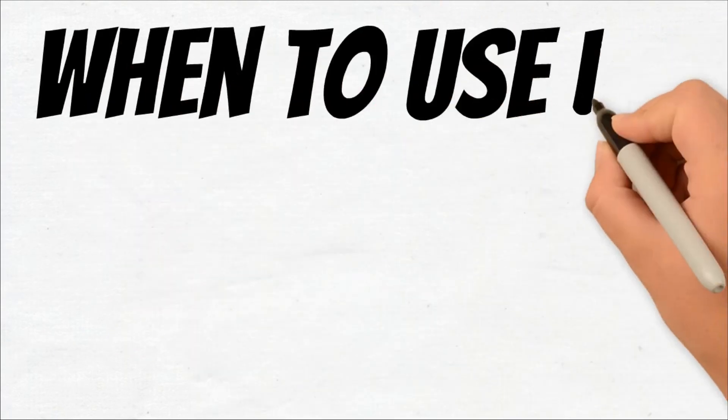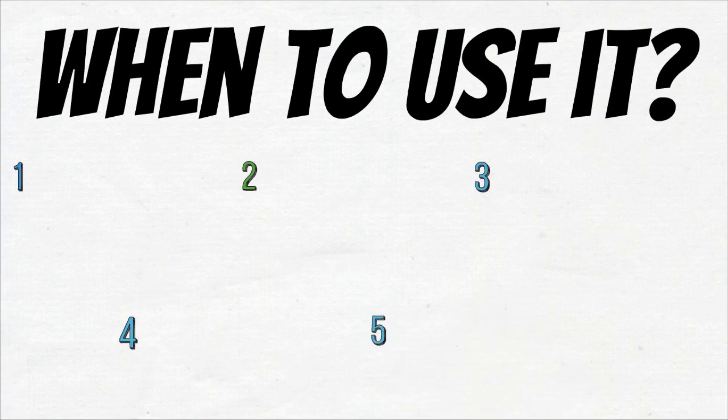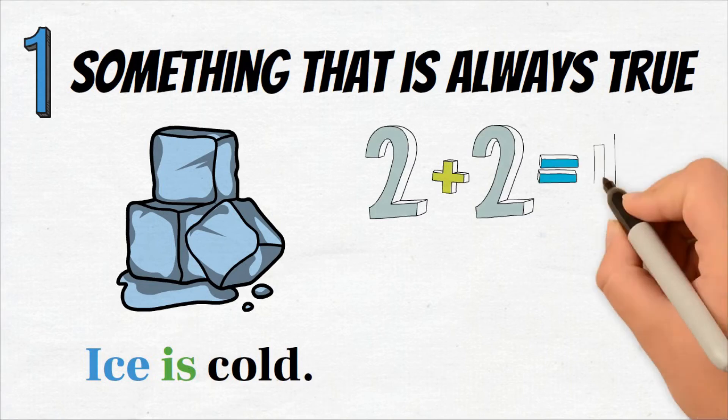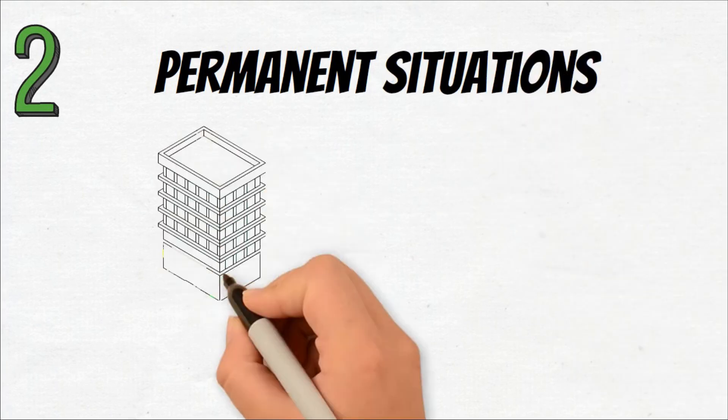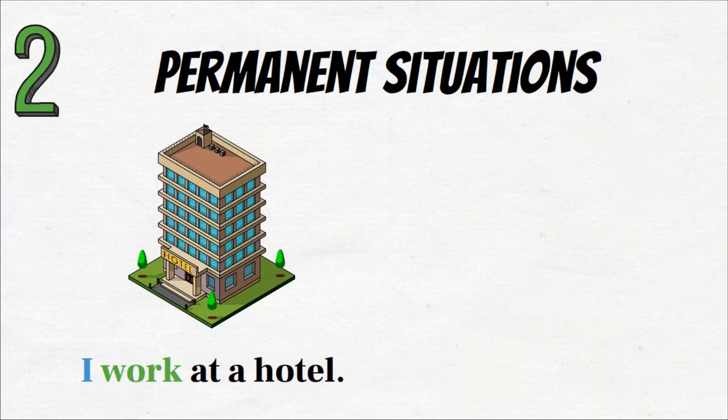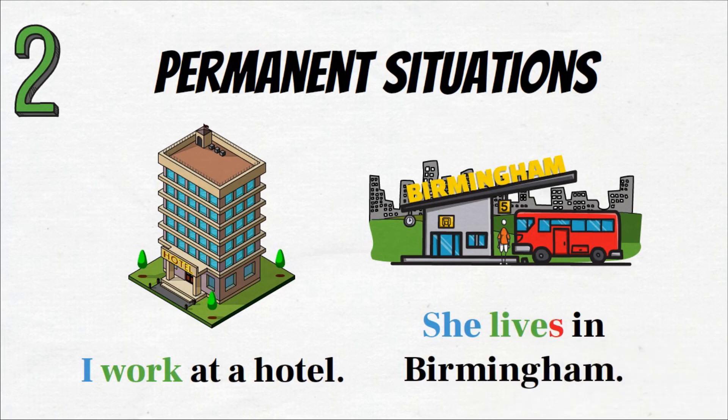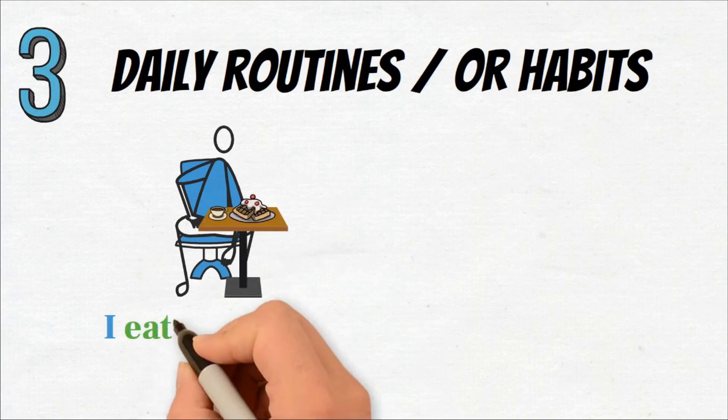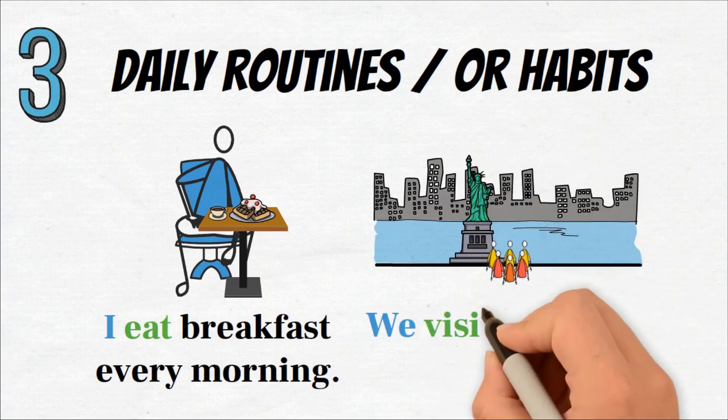Okay, let's see when we should use the present simple tense. We use the present simple tense to describe: Number one, something that is always true. Ice is cold, or two plus two equals four. Number two, permanent situations. I work at a hotel, or she lives in Birmingham. Number three, daily routines or habits. I eat breakfast every morning, or we visit New York every year.